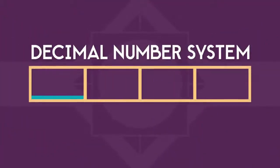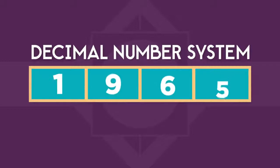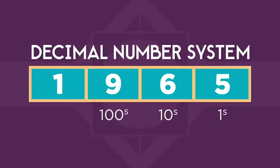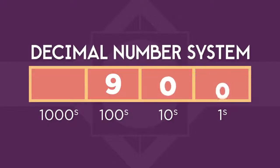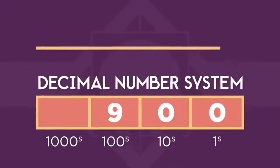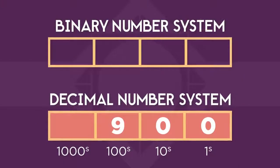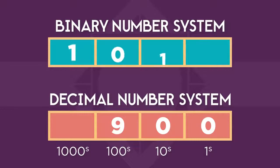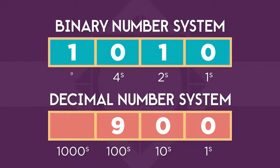In the decimal number system we're all used to, each position in a number has a different value — there's the 1 position, the 10 position, the 100 position, and so on. For example, a 9 in the 100 position is 900. In binary, each position also carries a value, but instead of multiplying by 10 each time, we multiply by 2. So there's the 1's position, the 2's position, the 4's position, the 8's position, and so on.